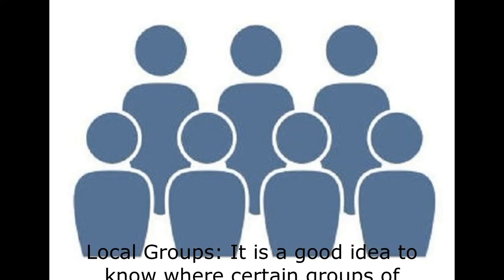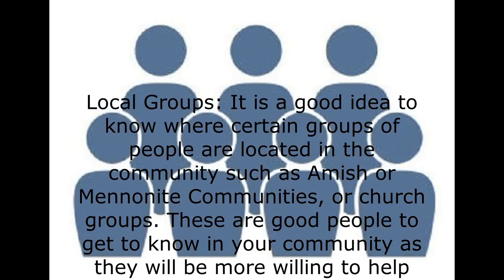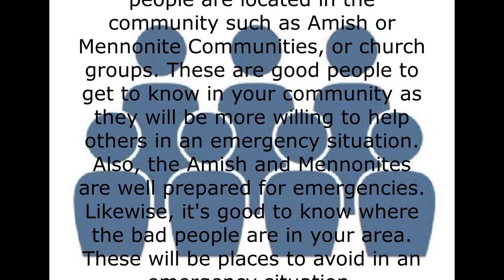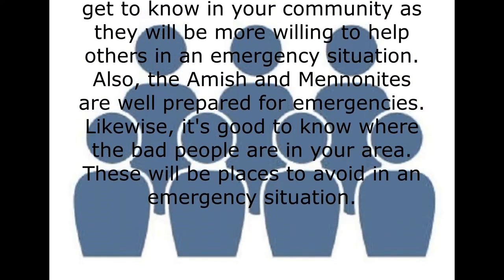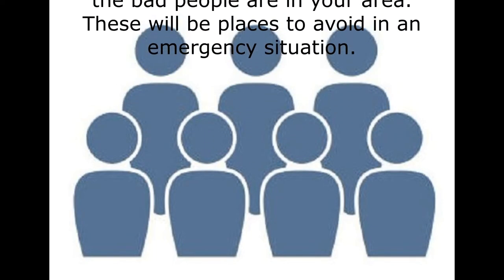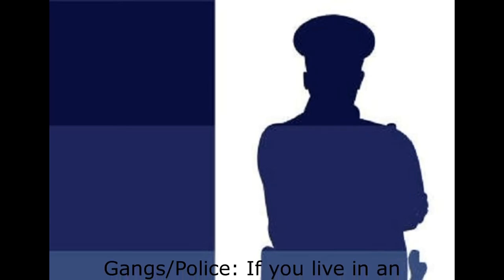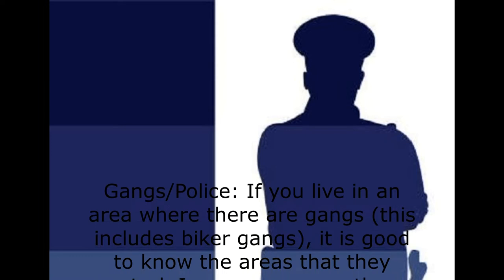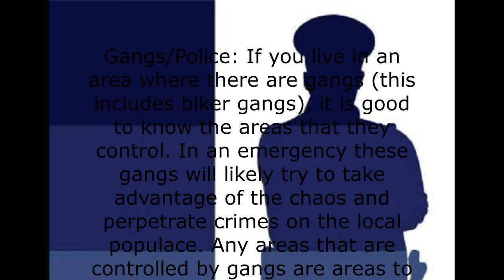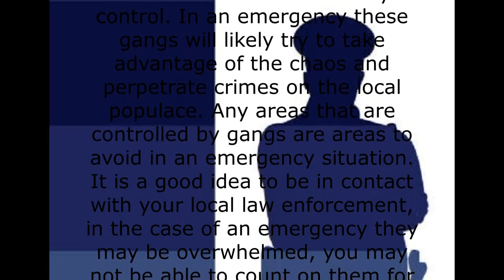It is a good idea to know where certain groups of people are located in the community, such as Amish or Mennonite communities or church groups. These are good people to get to know as they will be more willing to help others in an emergency situation, and the Amish and Mennonites are well prepared for emergencies. Likewise, it's good to know where the bad people are in your area. If you live in an area where there are gangs, including biker gangs, it is good to know the areas that they control. In an emergency, these gangs will likely try to take advantage of the chaos, and any areas they control are areas to avoid.